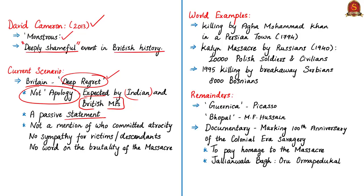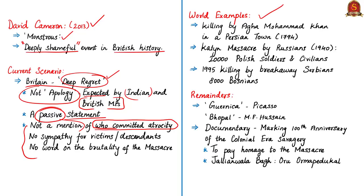The author condemns the statement, saying the words are important—especially in the heavily nuanced English language—and those who invented that language certainly know how to use them. One can imagine the careful drafting in Whitehall that would have gone into formulating the Prime Minister's statement. The second aspect that stands out is its passiveness: 'What happened? The suffering caused.' The words never mentioned who did this heinous massacre. In another article, the author tries to explain why some tragedies are not forgotten by the public, like the Jallianwala Bagh Massacre.